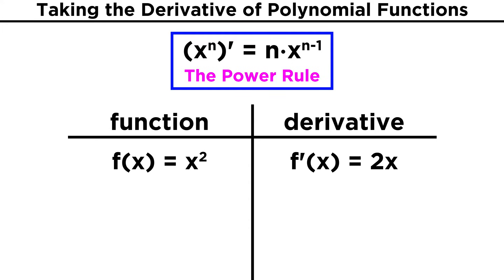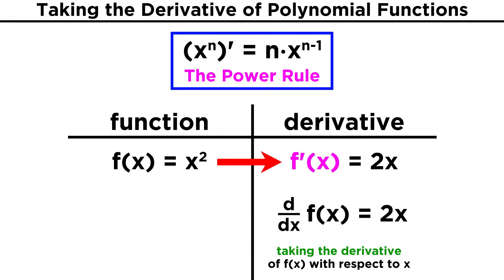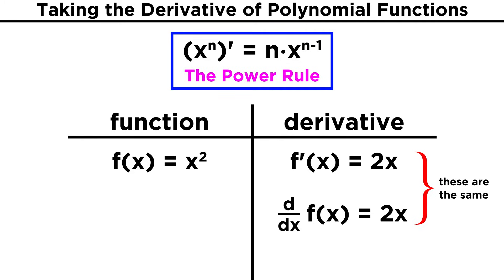At this point, let's introduce another type of notation. When we write d over dx, this notation implies differentiation. It means that we are differentiating something with respect to x, which is the same thing as taking the derivative of something. So just as f prime of x means the derivative of f of x, d over dx followed by some function means to take the derivative of that function with respect to x. Sometimes we will use one notation, sometimes we will use the other.